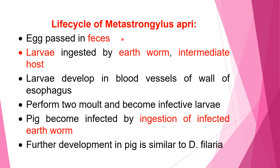Now we see the life cycle of Metastrongylus apri. The eggs are passed in the feces of the pig. The larvae are ingested by the intermediate host, the earthworm — remember, this parasite requires an earthworm as intermediate host. Larvae develop in the blood vessels of the wall of the esophagus of the earthworm, perform two molts, and become infective larvae within the earthworm. The pig becomes infected by ingestion of the infected earthworm. Further development of the parasite in the pig is similar to that of Dictyocaulus, as already described.